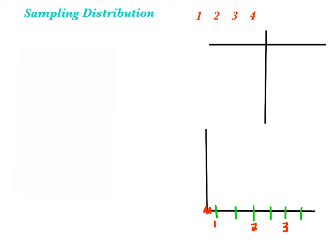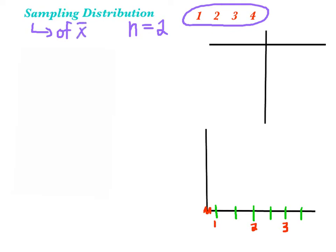Let's do that for this example. Consider the population 1, 2, 3, 4. We want to look at all samples of size 2. We're trying to find the sampling distribution of x-bar. To do this, we're going to look at every single possible sample of size 2. Here are all the possible samples of size 2, without any repeats, and sampling without replacement.